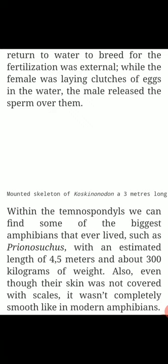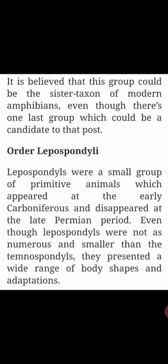Fertilization was external — while the female laid a clutch of eggs in the water, the male released sperm over them. Within the Temnospondyli, we can find some of the biggest amphibians that ever lived, such as Prionosuchus, with an estimated length of 5 meters and about 300 kg of weight. Even though their skin was not covered with scales, it was not completely smooth like in modern amphibians. It is believed that this group could be a sister taxon of the modern amphibians, even though there is one last group which could also be a candidate.